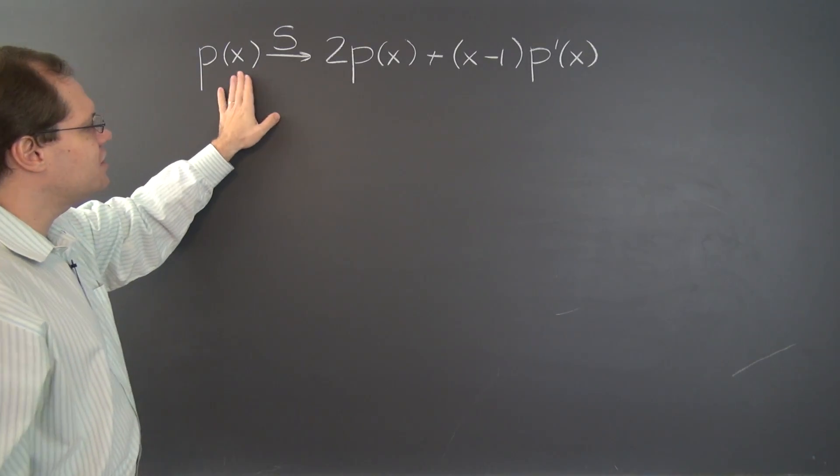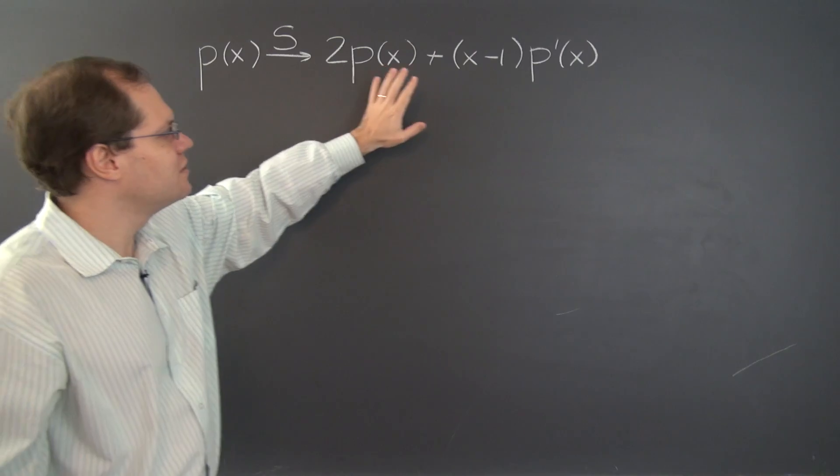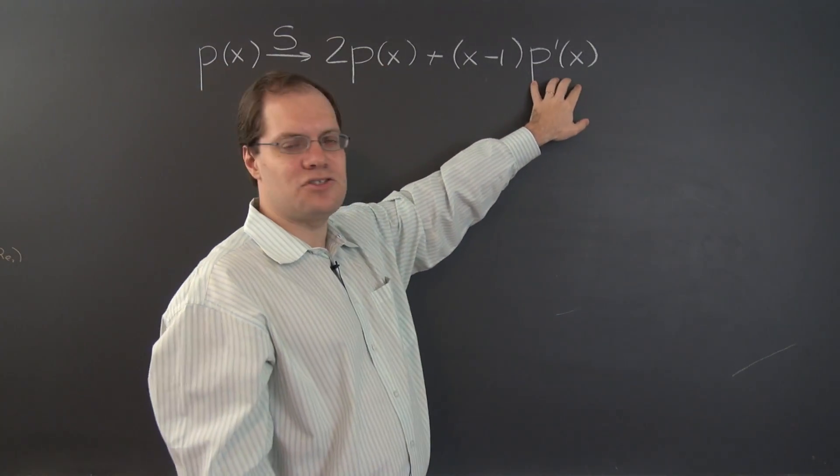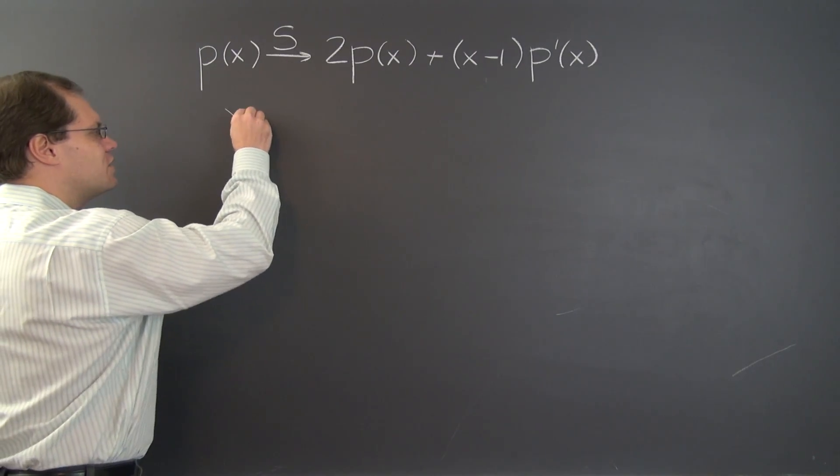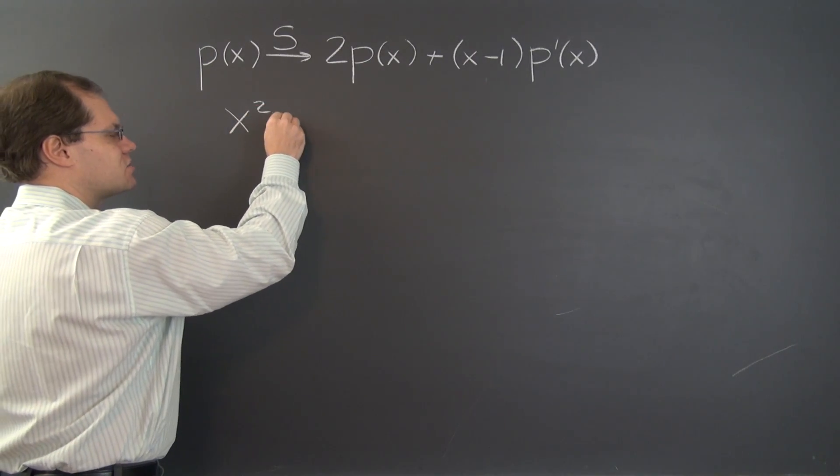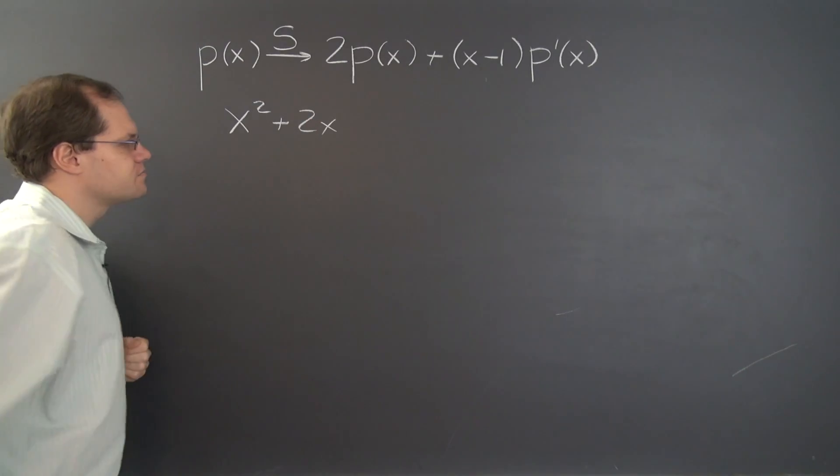So any polynomial is transformed to twice itself plus x minus 1 times its derivative. Totally silly transformation, but just to get an idea of what it does, let's apply it to x squared plus 2x.